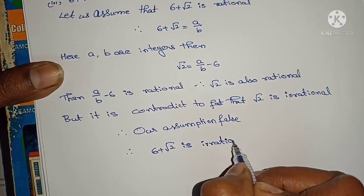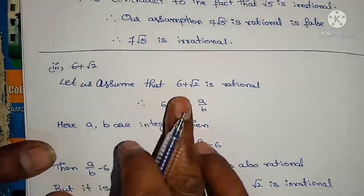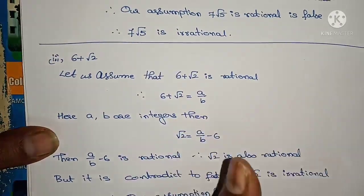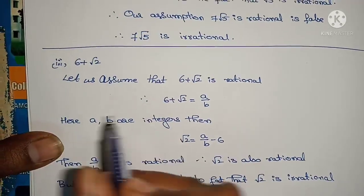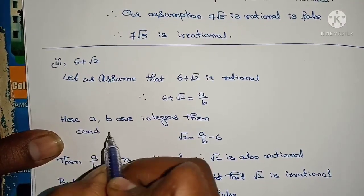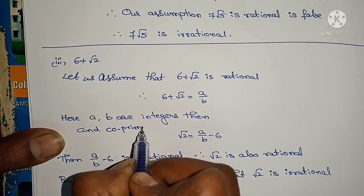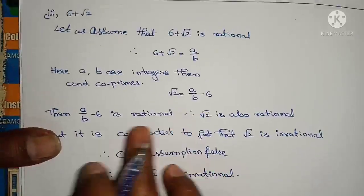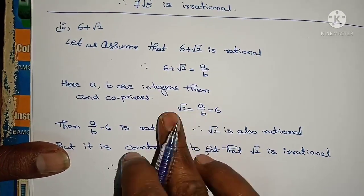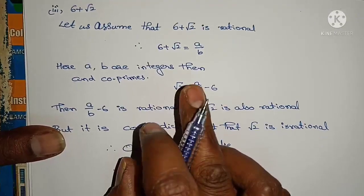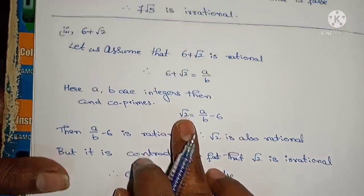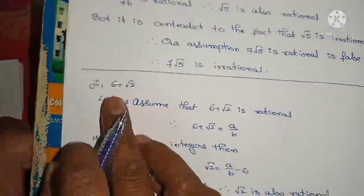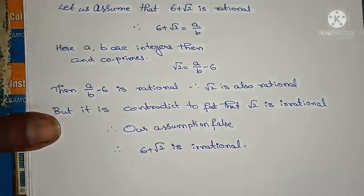To summarize: I considered 6 + √2 as rational and wrote it as a by b, where a and b are integers and co-primes. Rearranging gives root 2 = a/b − 6. If this is rational, root 2 would be rational — but root 2 is irrational. So our assumption that 6 + √2 is rational is false, and therefore 6 + √2 is irrational.